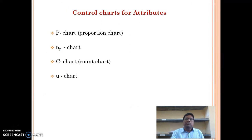In control charts for attributes, there are four charts: P chart (proportion defective chart), NP chart (number of defective items chart), C chart (count or defective chart), and U chart.